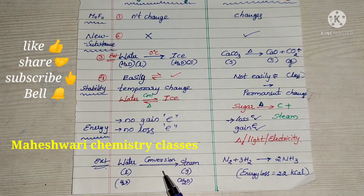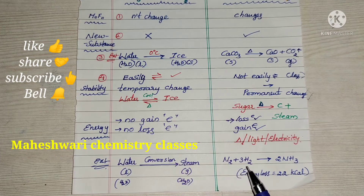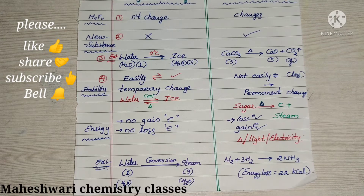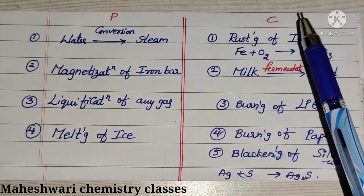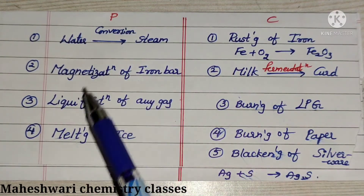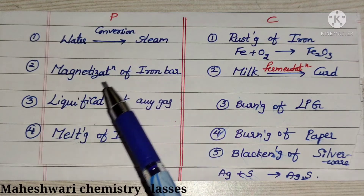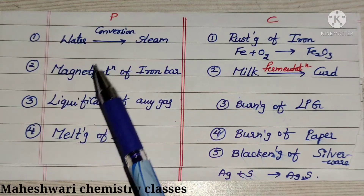Water converting to steam is a physical change — water is liquid and steam is gaseous, both H2O. Nitrogen plus hydrogen combining to form ammonia involves energy loss of 22 kilocalories — that is a chemical change. On one side I wrote P for physical change and C for chemical change. Water converting to steam is physical change. Magnetization of an iron bar is also a physical change, because the molecular formula does not change.